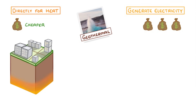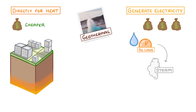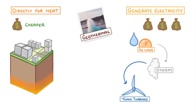In contrast, in order to generate electricity, we instead leave the water underground until it heats up so much that it's converted to steam. As this gaseous steam rises, it turns turbines, which drive the generators to produce electricity.